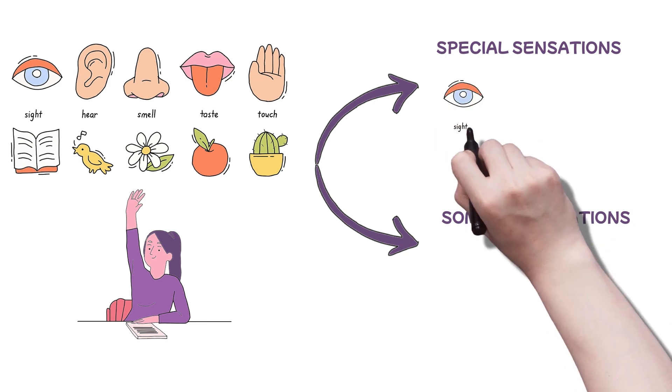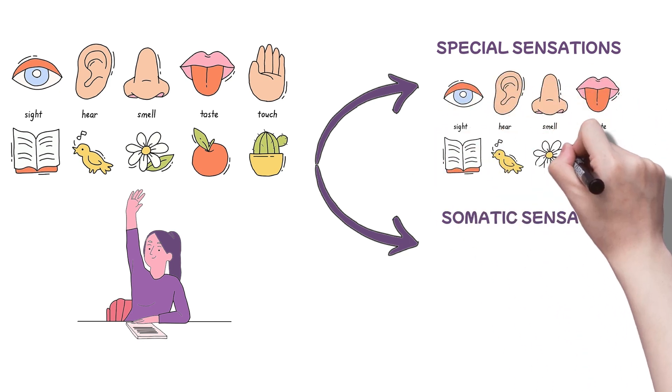The somatic sensations, meanwhile, arise from the intricate network of receptors within our skin, muscles, tendons, and joints. These form the somatosensory system.